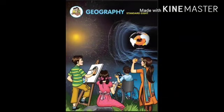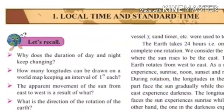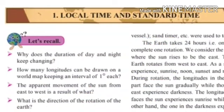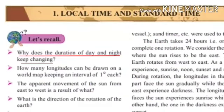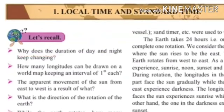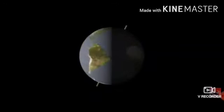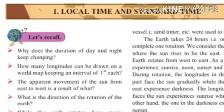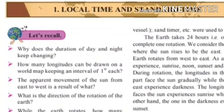Geography Standard 8 — Local Time and Standard Time. Let's Recall: Why does the duration of day and night keep changing? The reason is the earth is tilted at an angle of 23.5 degrees. Therefore, the duration of night and day keeps changing.